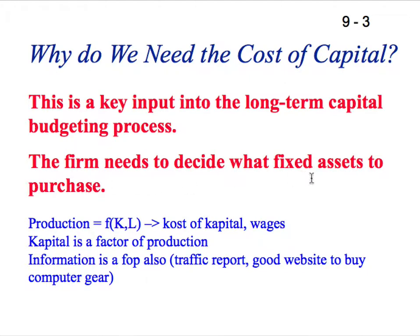The firm needs to decide what fixed assets to purchase. The classic production function is that production is a function of K and L — capital and labor. Google can produce something because it has capital and labor, perhaps more labor, and the capital required is basically an office with some computing devices. Then you can have a capital-intensive company like General Motors or General Dynamics, where there's a lot of equipment and fixed assets, and of course human capital to run it.